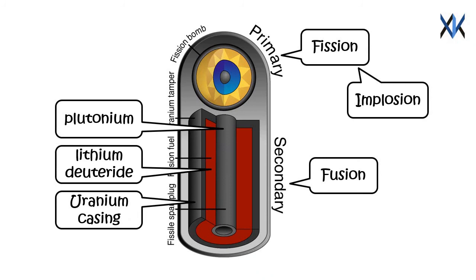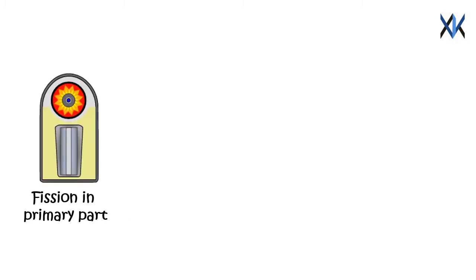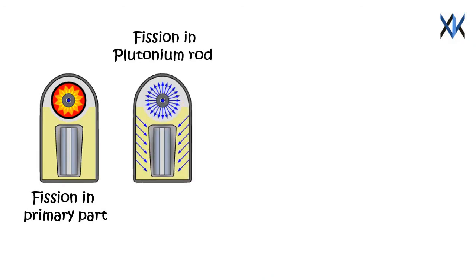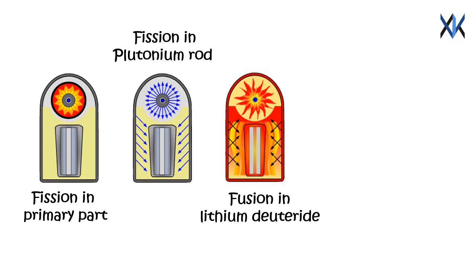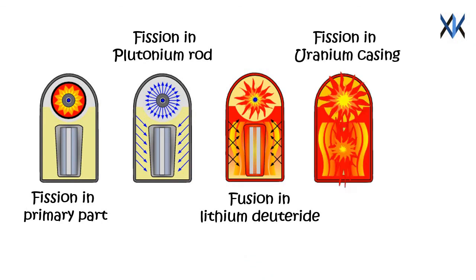So briefly what happens in a hydrogen bomb is: primary part undergoes fission, which results in fission of plutonium in secondary cell by implosion, which causes fusion of lithium deuteride and results in fission of uranium casing. So that's lots of energy to deal with, roughly 210 times 10 to the power 15 joules.